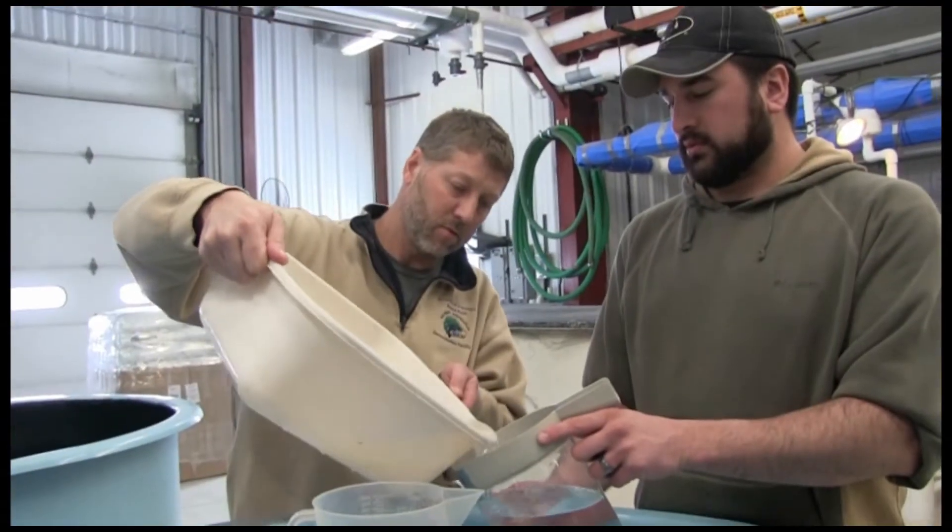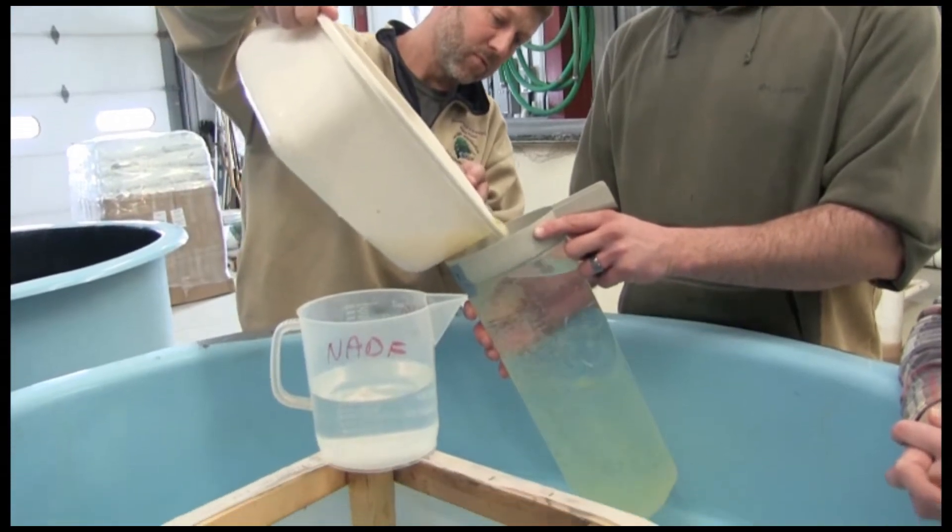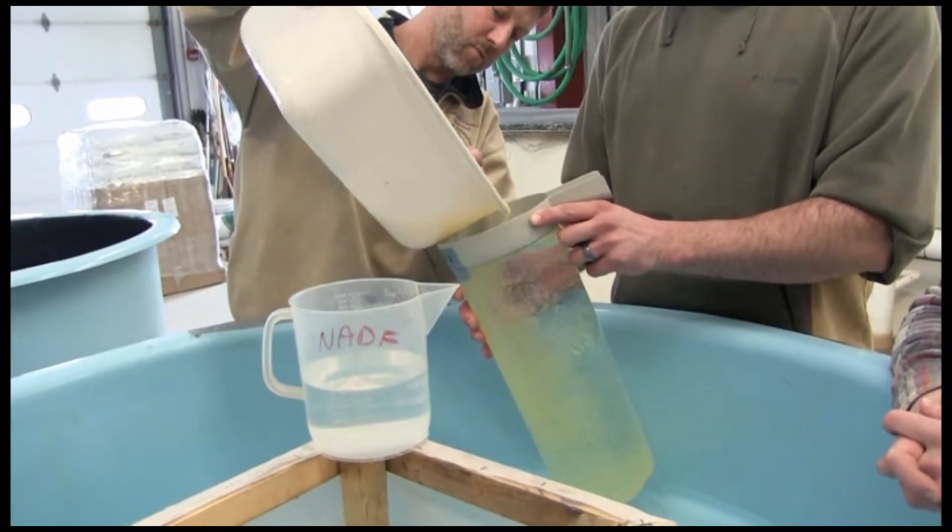The eggs are slowly poured with water into the McDonald style jar. Typically, 3 to 4 liters of eggs or less are added to each jar.